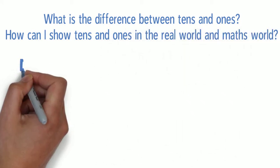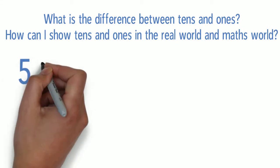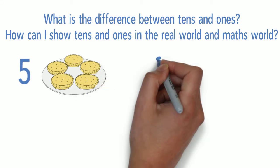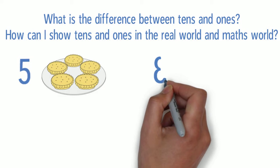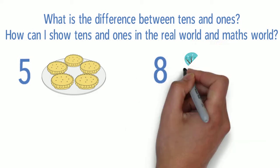Tens and ones are used to help us show the value of a number. There's no point in saying or writing the number five if you don't know what that actually means. We can show the value of a number in the maths world by writing it down, but in the real world it's about seeing that amount of objects.